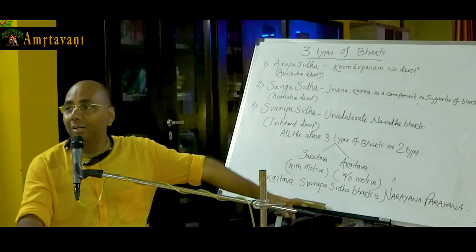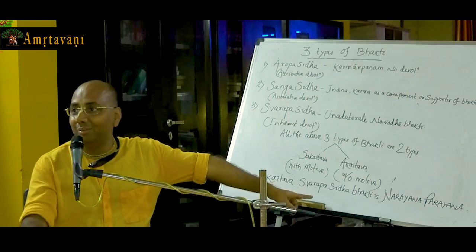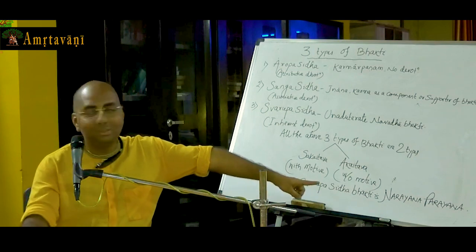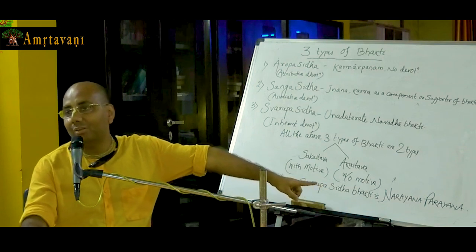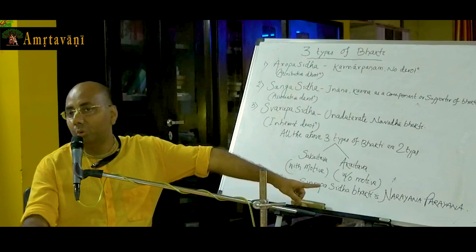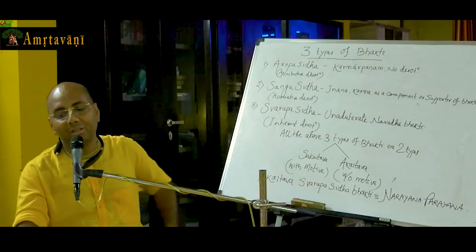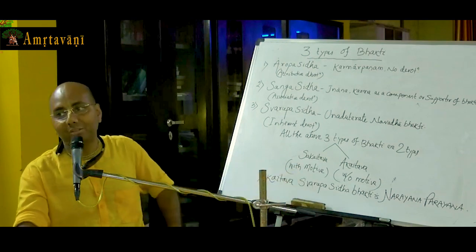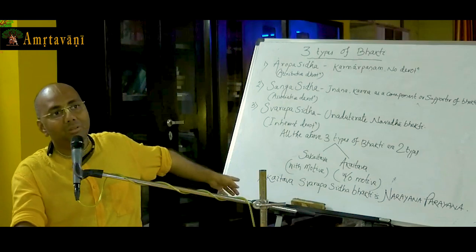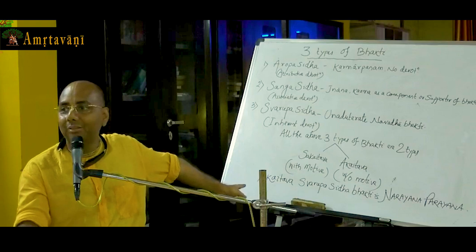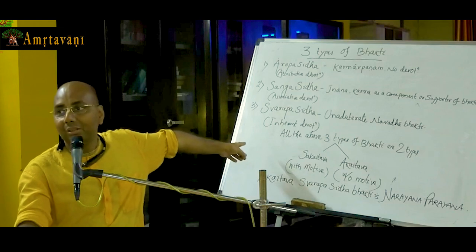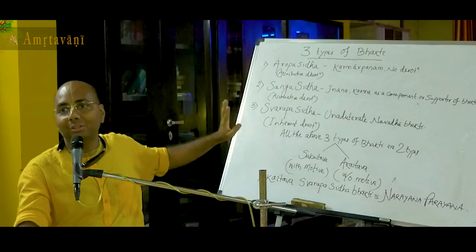What is the ultimate answer? Please read Shambhala Rampu. This is according to Jeeva Goswami's explanation, discussion. The Narayana Parayana, this Narayana Parayana is Sudullabha, Prasanta Atma, Kotishu Api Mahamune. My dear devotees, this is our goal, Narayana Parayana. We have to have uninterrupted, unmotivated, Akaitava, that too also Swarupa Siddha. Not even Sanga Siddha or Aropa Siddha. Swarupa Siddha.